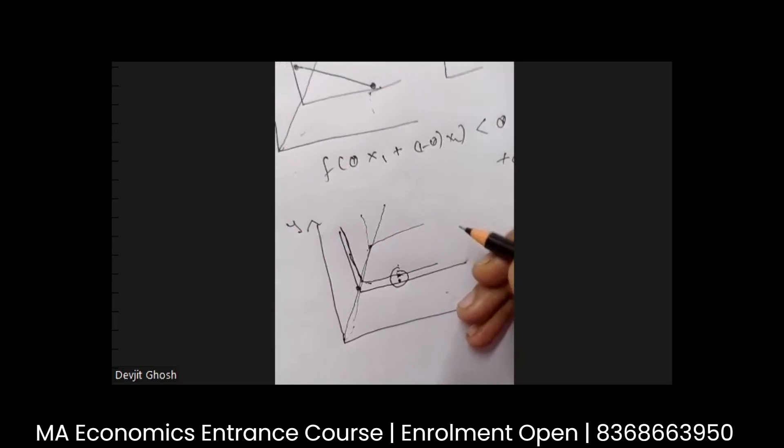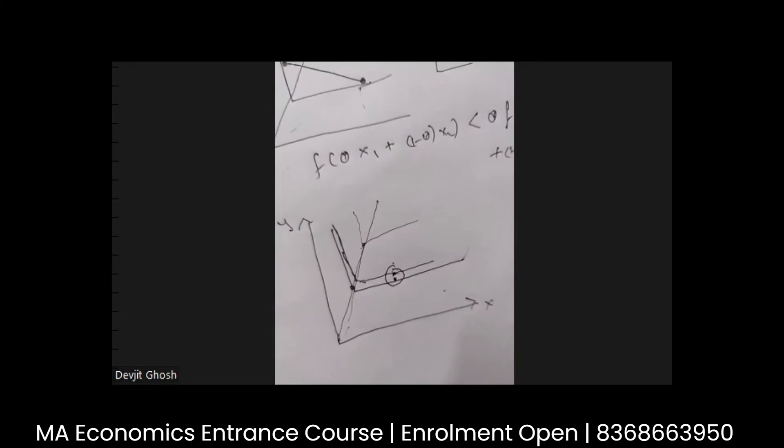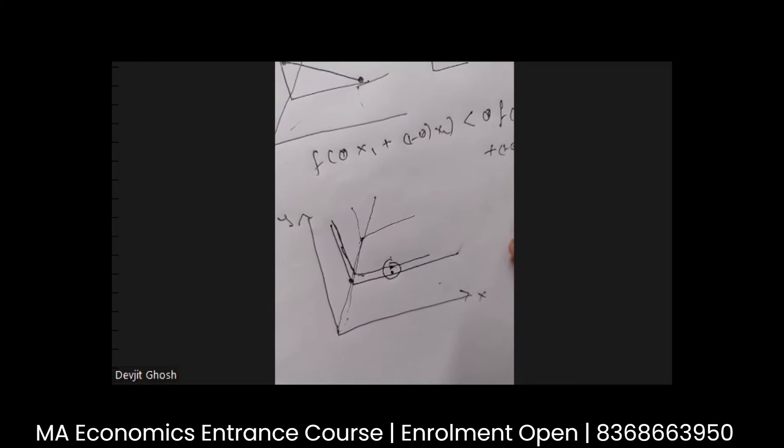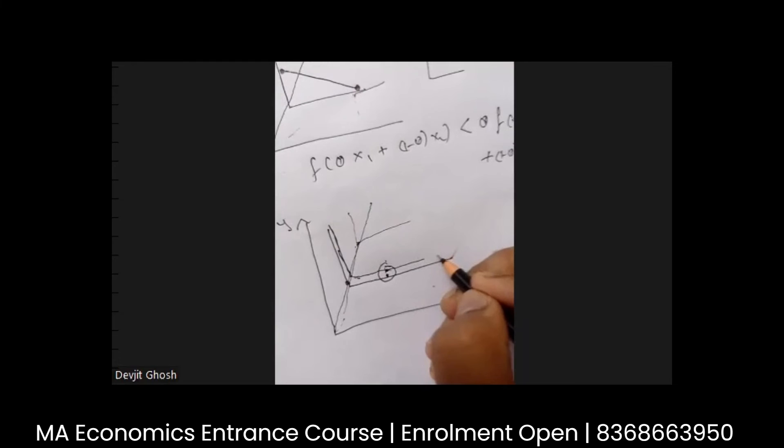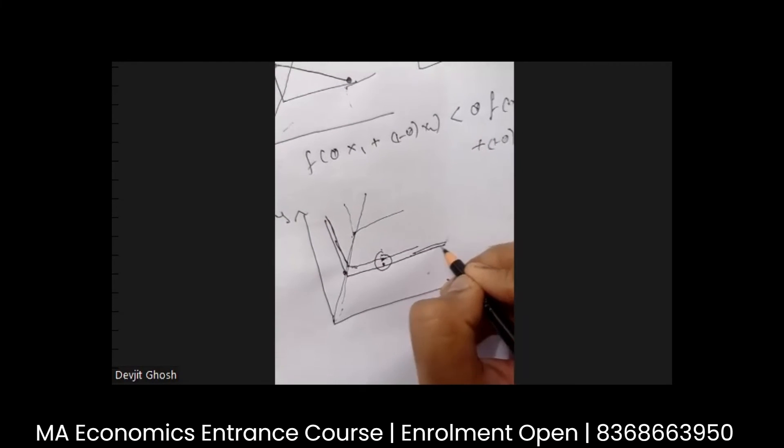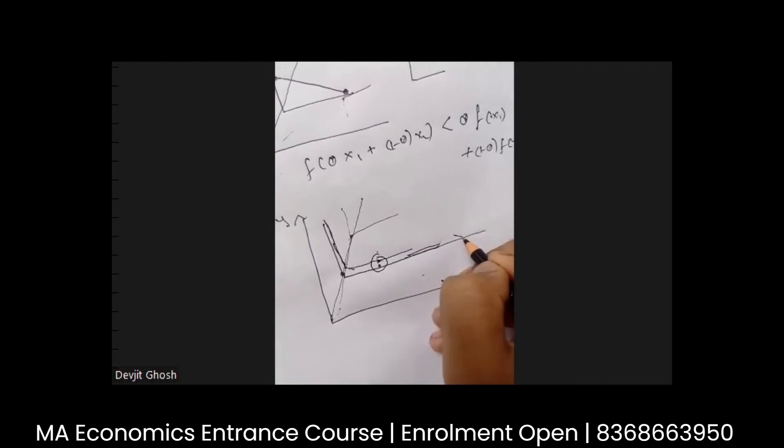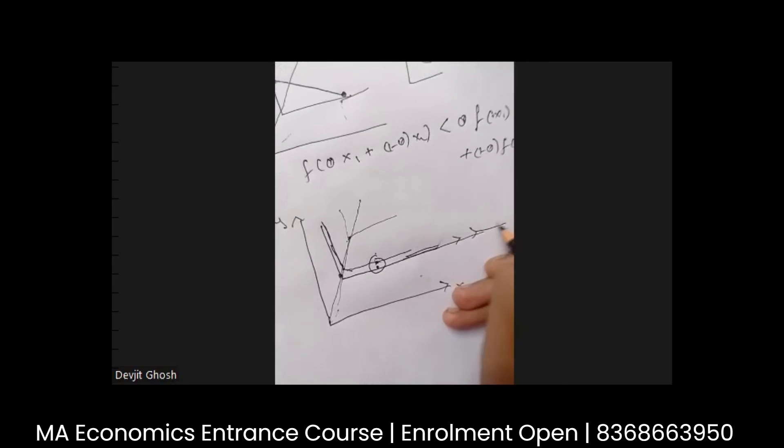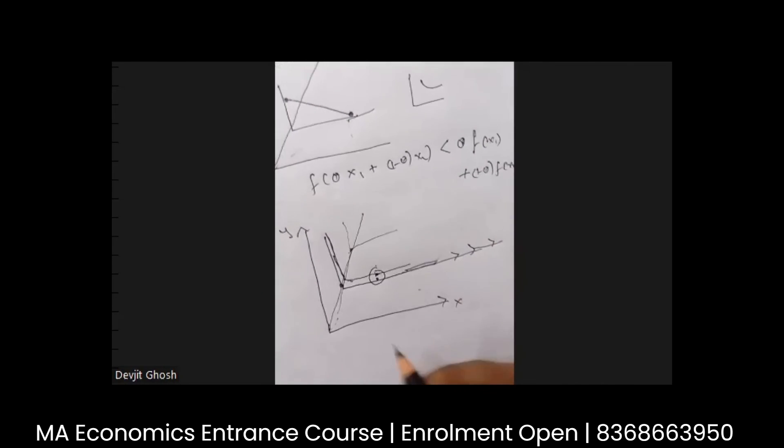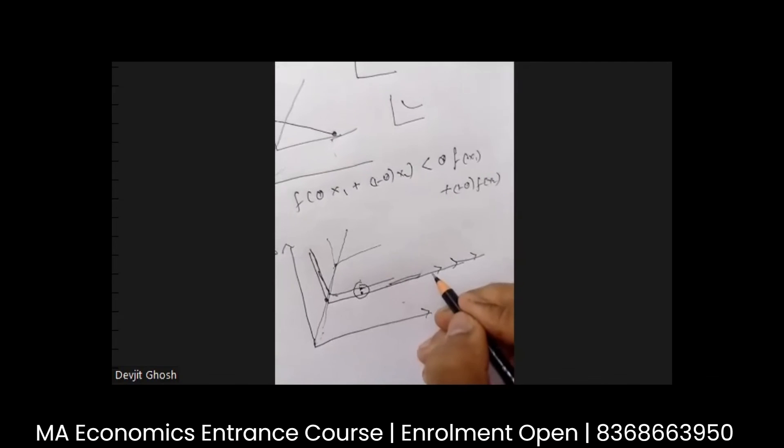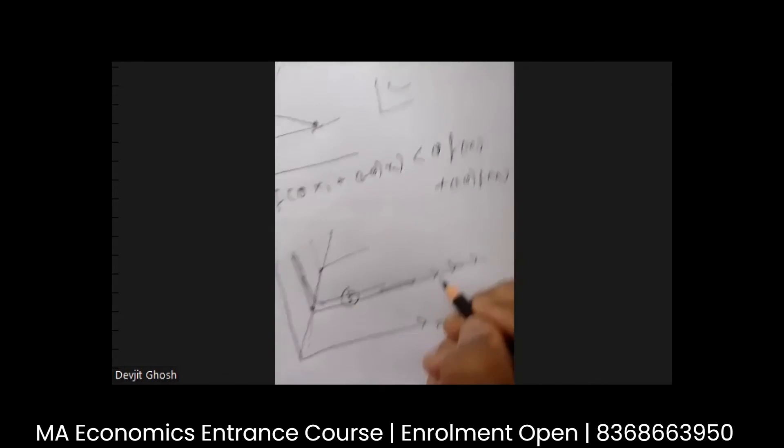So monotonic means that when I increase the consumption of one commodity, holding the other constant, it should increase my utility. Please do that. Yeah, if you move along this point, it's still the same on the same IC, so it's not weakly monotonic.